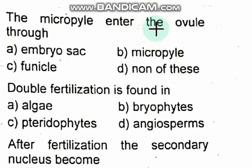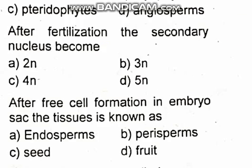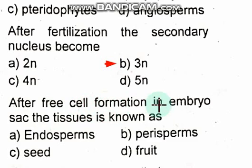The pollen tube enters the ovule through the micropyle. Double fertilization is found in angiosperms. After fertilization, the secondary nucleus becomes triploid (3N). After free cell formation in the embryo sac, the tissue formed is known as endosperm.